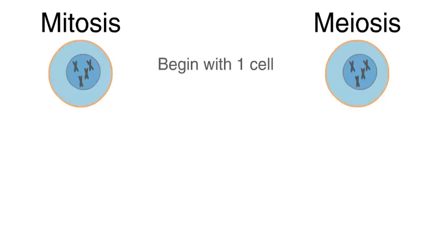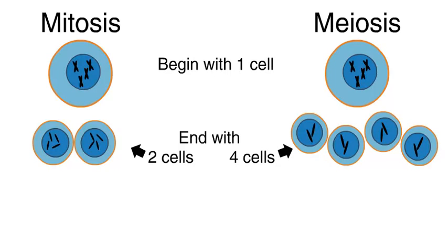Let's compare mitosis and meiosis. Both begin with one cell. Mitosis ends with two cells, and meiosis ends with four cells.